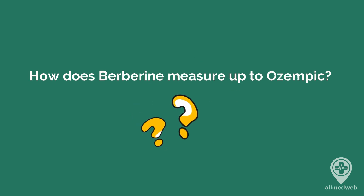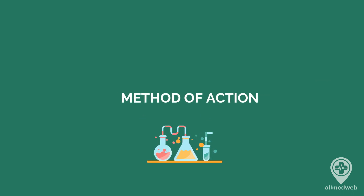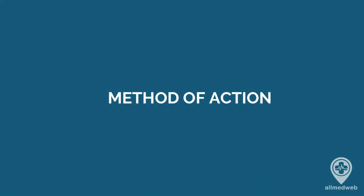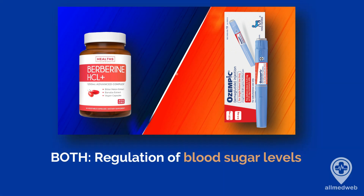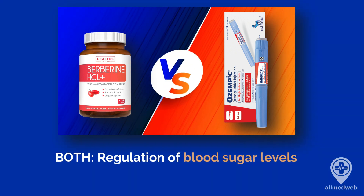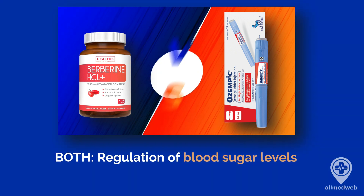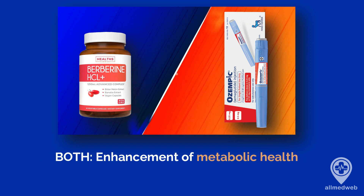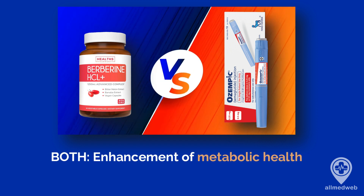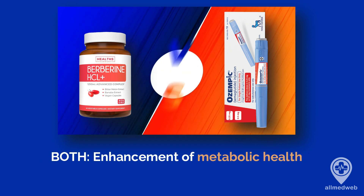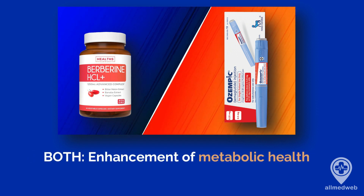How does berberine measure up to Ozempic? The key difference between berberine and Ozempic lies in their method of action. Although both might assist in regulating blood sugar levels and enhancing metabolic health, they are distinct substances with varied mechanisms.